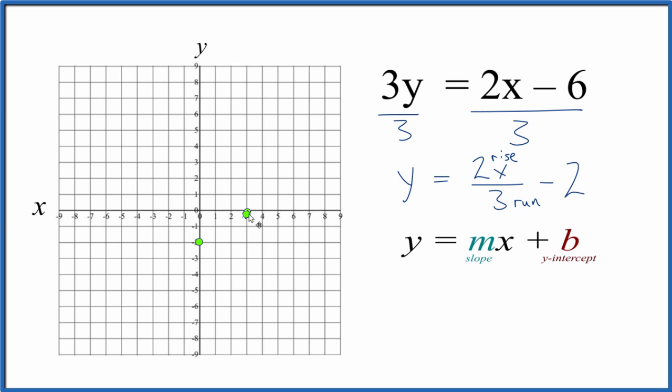Let's do it again, though, from our new point here. Go up 1, 2, and then 1, 2, 3 to the right. You can see these are all in a line.